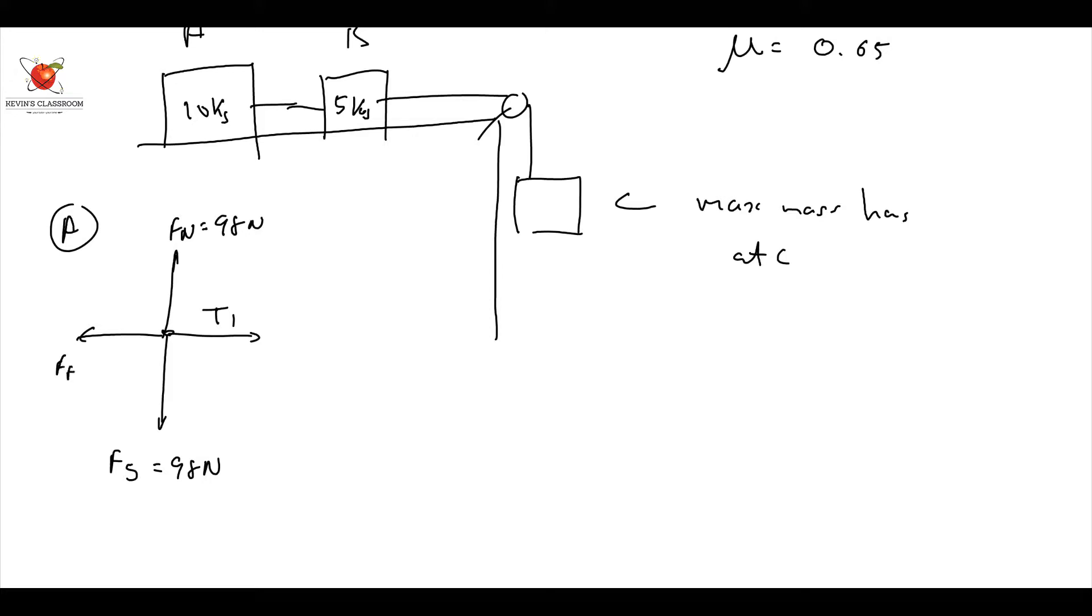and FF friction holding me back, and friction is going to be 0.65 times F normal, which is 98, which gives me 63.7 newtons, like that, equal to 63.7 newtons, that way. Now,